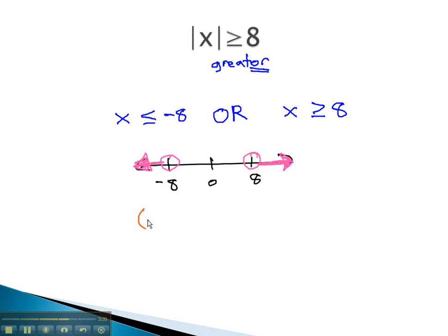In interval notation, negative infinity... Oops, we should be using closed dots because it's or equal to. Sorry about that. So from negative infinity, we go to negative 8 with a square bracket, union to show there's a second part, and then from 8 up to infinity.